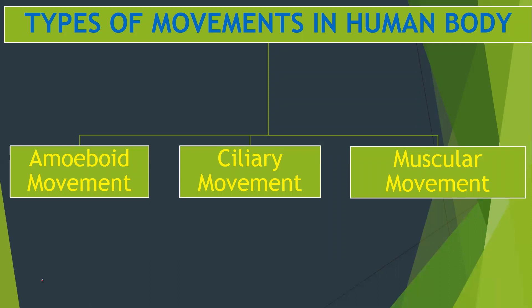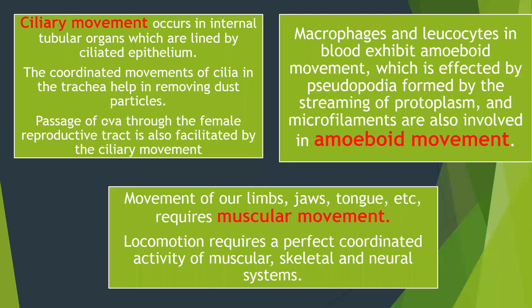Now, if you see the types of movement in the human body, there can be three types: amoeboid movement, ciliary movement, and muscular movement. What is amoeboid movement? It is seen in macrophages and leucocytes. They exhibit amoeboid movement — that is, amoeba-like movement — in which they form pseudopodia, just like amoeba, and engulf the substance. They form pseudopodia, streaming of protoplasm occurs, and microfilaments are also involved.